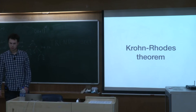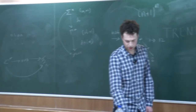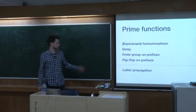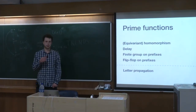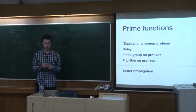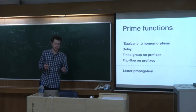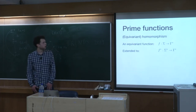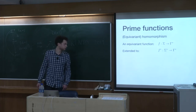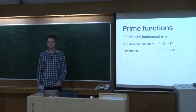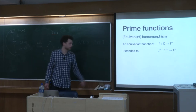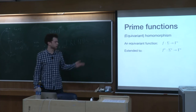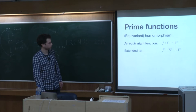A nice property of this type of transducer is that it admits a Krohn-Rhodes decomposition. There are five prime functions and every function recognized by a one-way single-use register automaton can be expressed as the composition of those functions. Basically we can have a homomorphism between a letter and a word — every function from a letter to a word extends to a function from word to word. This homomorphism has to be equivariant, meaning it can only look at equality and cannot, for example, determine if an atom is odd or even.